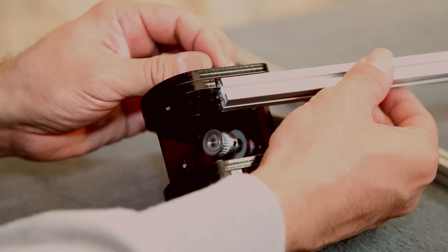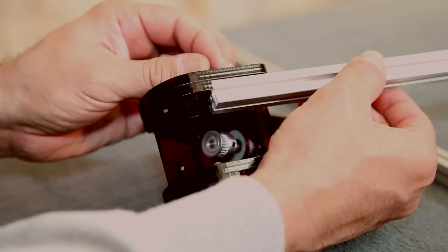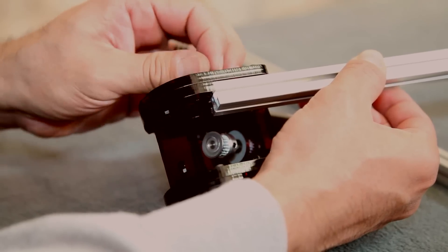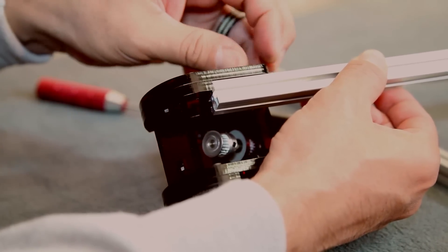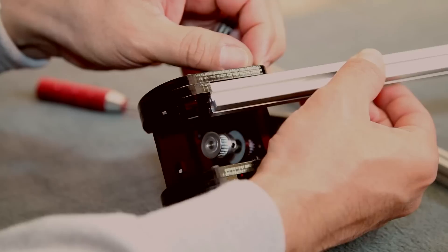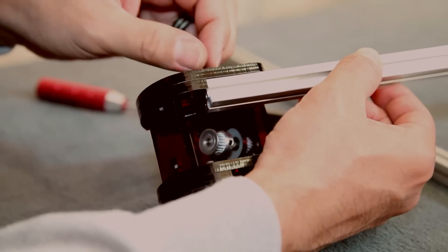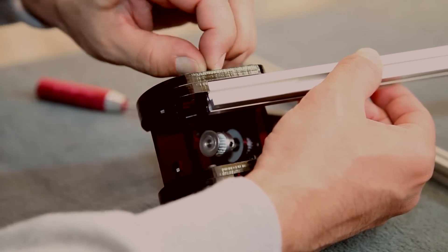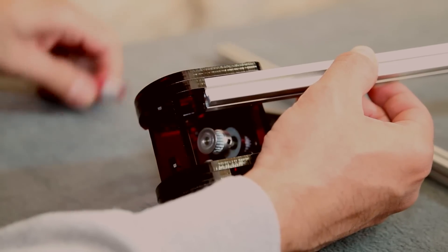You need to get the nut to line up just right on the bar. You want to finger tighten it so you can hold it in place and then you want to tighten it a half turn tightness.